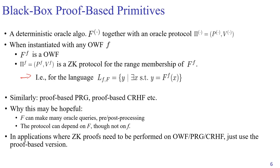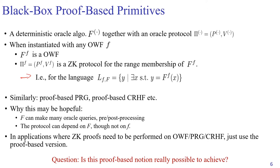We call this primitive a proof-based one-way function. We can also define proof-based PRG and collision-resistant hash function in a similar way. Now, why does this approach have the potential to bypass Resulac's lower bound? There are two reasons. First, given an input, the capital F can make many oracle queries to the small f, and it can perform post-processing or pre-processing on the intermediate oracle answers. Also, the protocol π, even though it cannot use the code of small f, can use the code of capital F. If this idea can really help us bypass Resulac's lower bound, then in applications where you need to run a zero knowledge proof on a one-way function, PRG, or hash function, we'll just use the proof-based version instead.